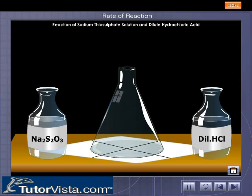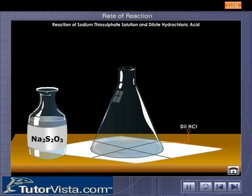A conical flask is placed on it. Dilute hydrochloric acid is dropped into the flask. Then sodium thiosulfate solution is added.